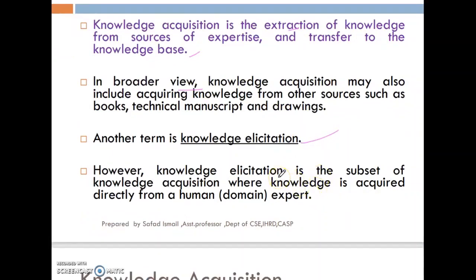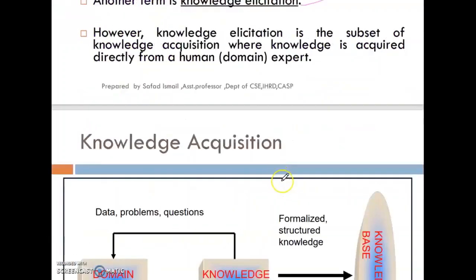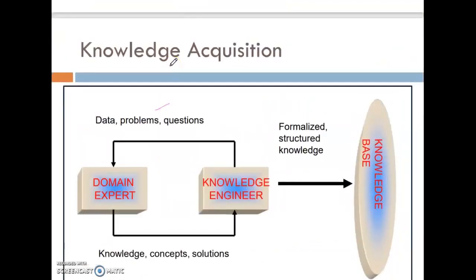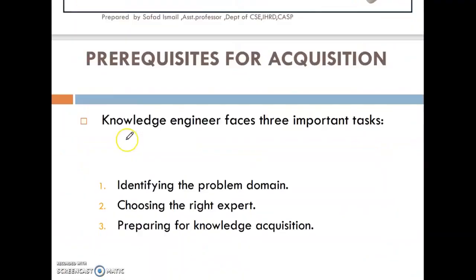For knowledge citation, we have acquired knowledge from a human expert. We are talking about accurate knowledge citation. There are three variables in the knowledge acquisition. We have already asked questions to the domain expert. We are getting accurate knowledge. If we have a knowledge engineer, we can get these concepts and solutions. So we can structure it, create a formula for knowledge, create a knowledge base, structured knowledge, and new data.